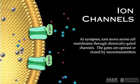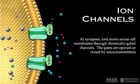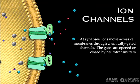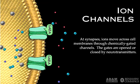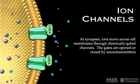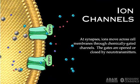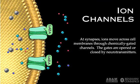At synapses, ions move across cell membranes through chemically gated channels. The gates are opened or closed by neurotransmitters.